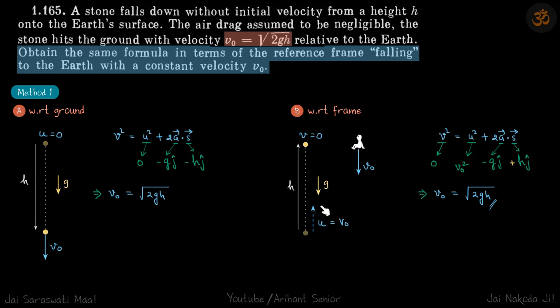Now gravity is still down and eventually it comes to rest with respect to the observer, because finally the speed of the observer is same as the speed with which it is hitting the ground. So with respect to the observer, finally the stone will come to rest and initially it is moving opposite to the observer with velocity v₀.